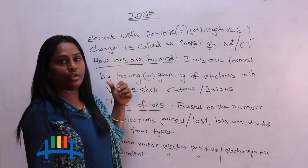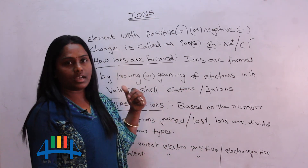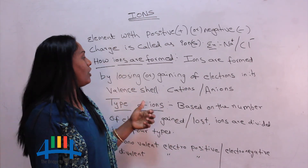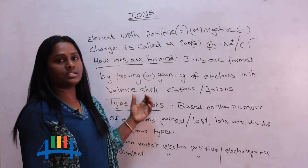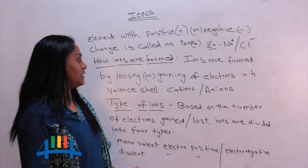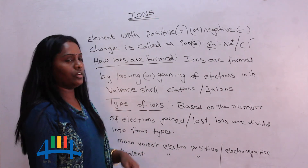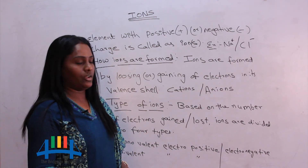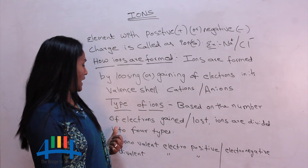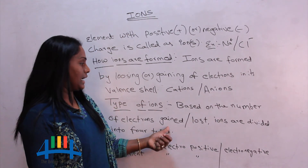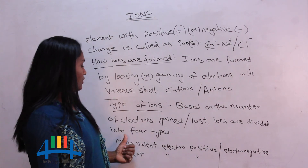How are ions formed? Ions are formed by losing electrons from the valence shell or by gaining electrons in the valence shell. Now, what are the types of ions? Based on the number of electrons gained or lost, ions are divided into four types.